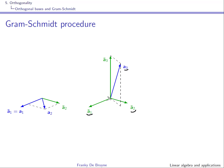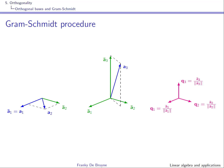We project A3 onto the previous vectors A1 bar and A2 bar, and remove this projection from A3 to obtain A3 bar, which is orthogonal to both A1 bar and A2 bar. Assuming we have three columns in the matrix, we have now produced three orthogonal vectors A1 bar, A2 bar, and A3 bar. To make them orthonormal, we simply divide by their respective lengths, obtaining Q1, Q2, and Q3.